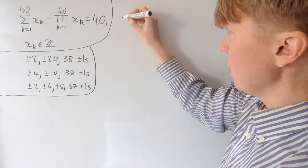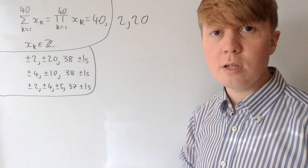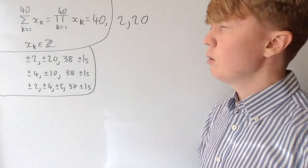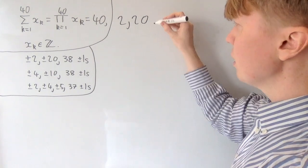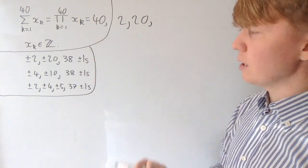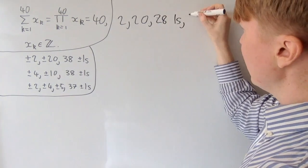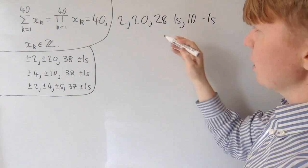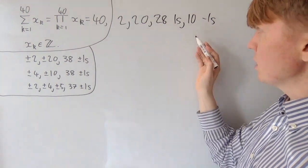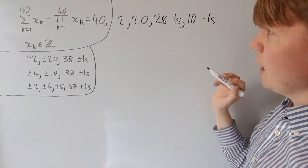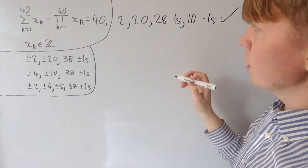Now we start constructing examples. With +2 and +20, the contribution to the sum is 22, so we need the ±1s to contribute 18. With exactly 38 ±1s, we take 28 positive 1s and 10 negative 1s. The sum is 40, and the product — since we have an even number of negatives — is positive 40. So this example works with 2 and 20.